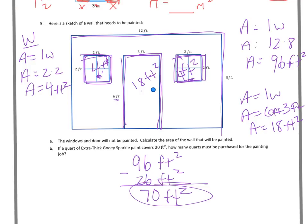Part B says if a quart of extra thick gooey sparkle paint covers 30 feet squared how many quarts must be purchased for the paint job? So 1 quart equals 30 feet squared. I know 1 quart...